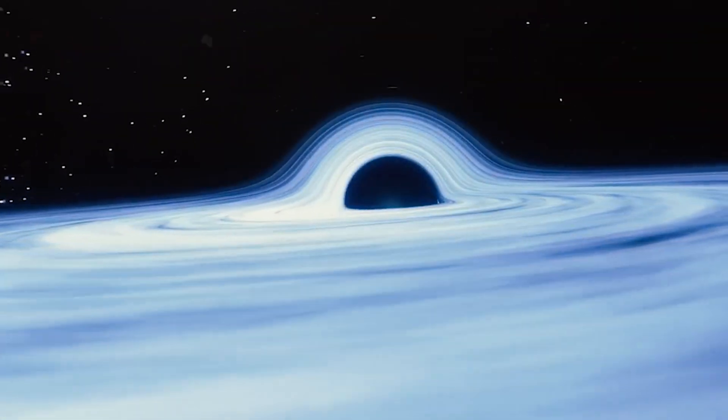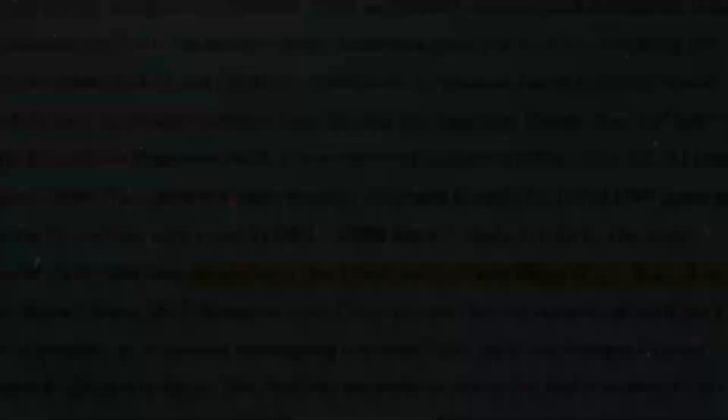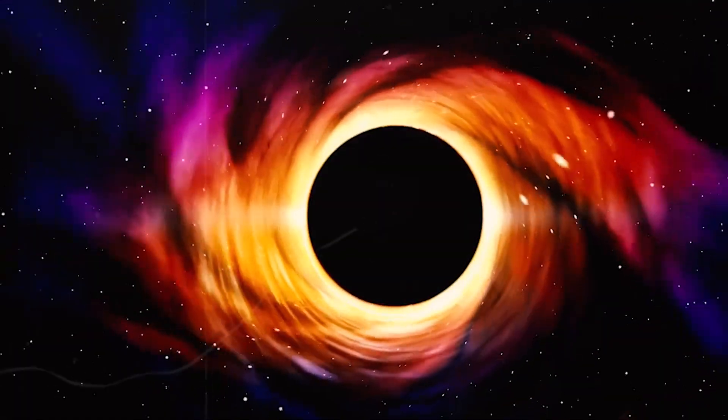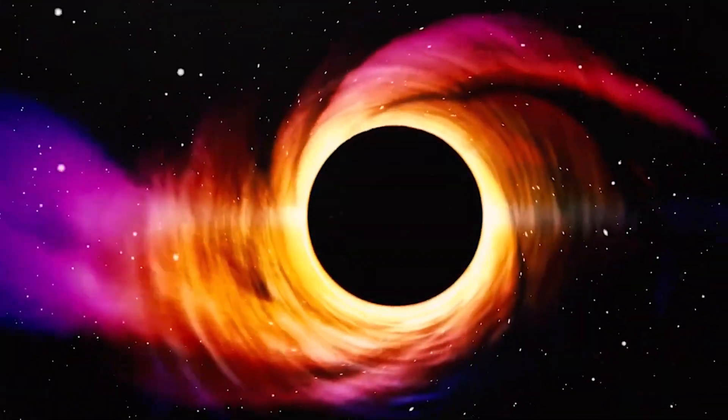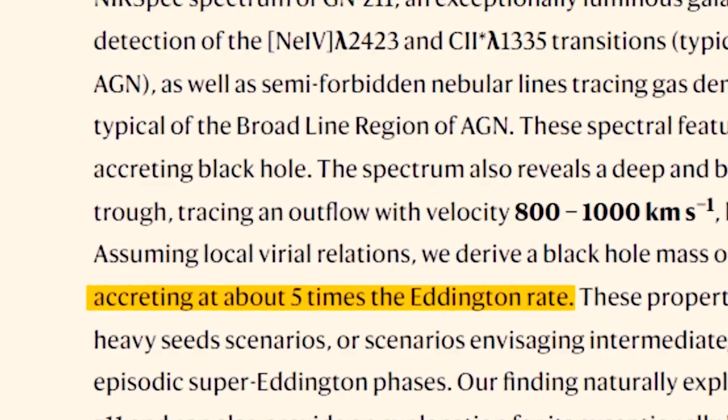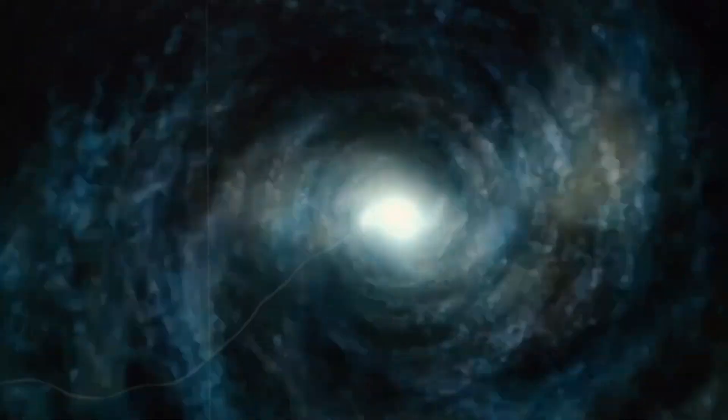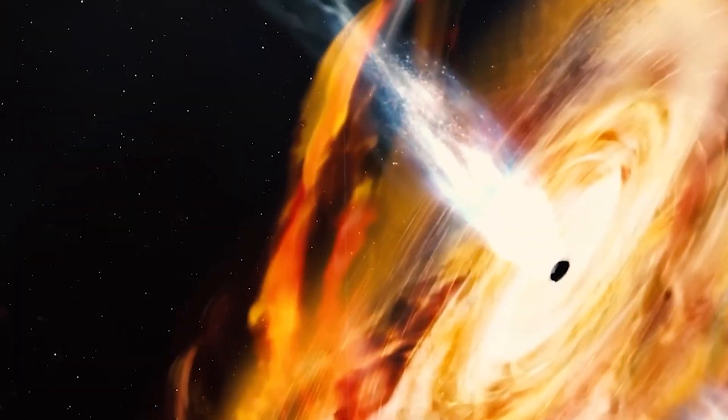The mass of the black hole is 1.6 million times that of our sun, and the accretion rate is the amount of matter that the black hole is swallowing from its surroundings, which in this case is very high, about 10% of the Eddington limit, which is the maximum rate that a black hole can accrete without blowing away the incoming matter with its radiation.